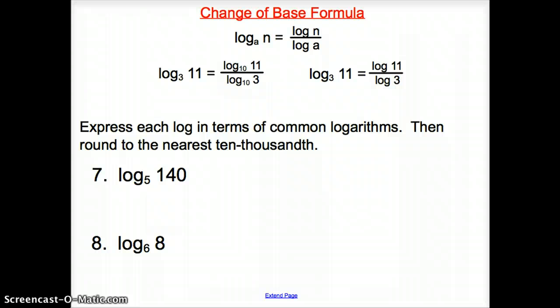So how do we tackle these? First one, log base 5 of 140. We're going to express it in terms of common logs, then round to the nearest ten thousandth. So in common logs, it is log 140 over log 5. There it is expressed in common logs. Now you can just punch in your calculator.